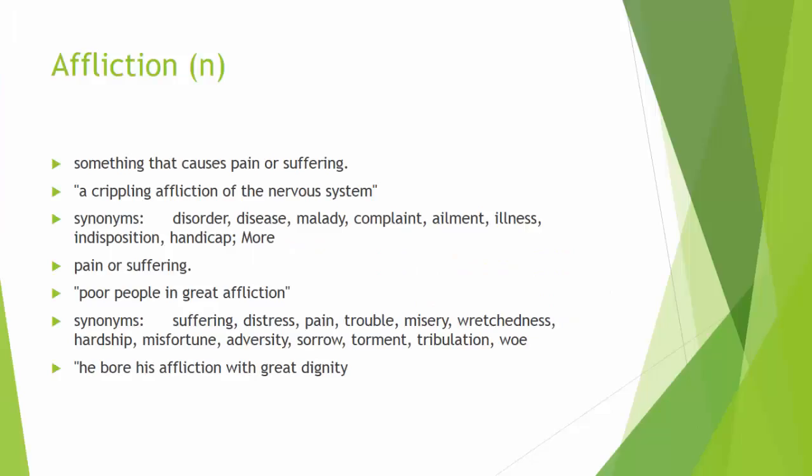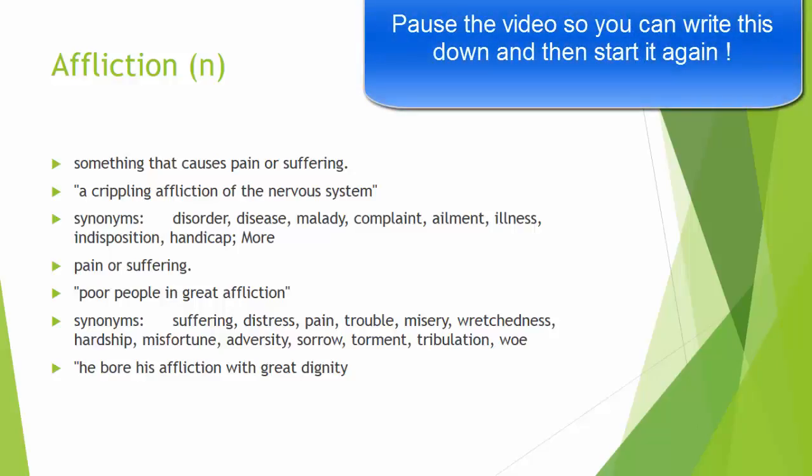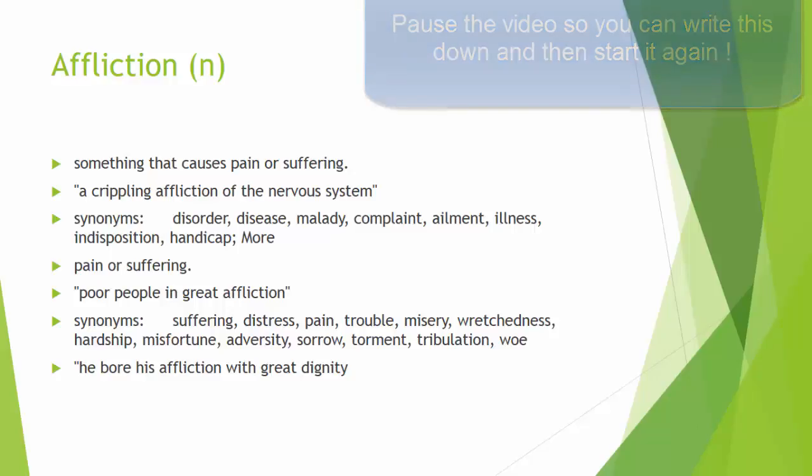Your first word is affliction. It is a noun. It means something causing pain or suffering. Synonyms: disorder, disease, malady. You could probably guess that this is a negatively toned word. It's usually used in conjunction with an illness or a sickness. You can have an affliction of the body or an affliction of the mind.